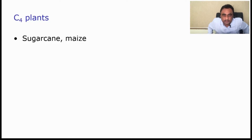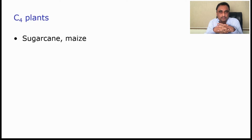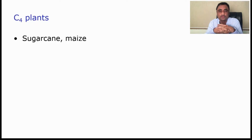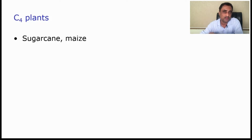What exactly is the C4 plant and how we can differentiate it from C3 plants? The C4 plant, or Hatch and Slack cycle, was worked out in a separate group of plants like sugarcane and maize, where we found that the fixation of carbon occurs entirely differently with respect to C3 plants.